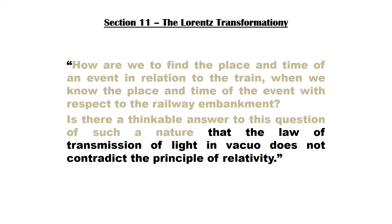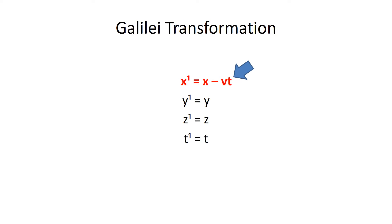Einstein adds a further stipulation that the Galilei transformation cannot satisfy: the law of transmission of light in vacuo must not contradict the principle of relativity — in other words, the constancy of the speed of light in a vacuum must be preserved. The reason the Galilei transformation fails is straightforward: the transformation rule on the x-axis places no limit on velocity v, allowing v to be any value and thus presenting the possibility that v could exceed the constant speed of light in a vacuum.